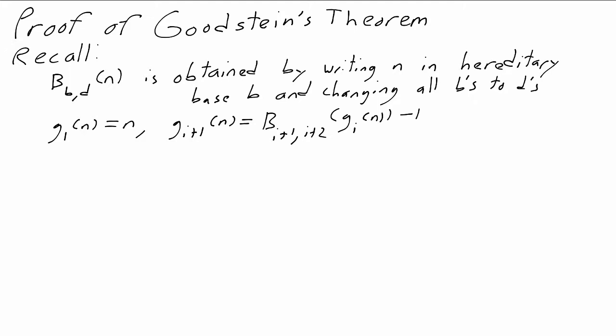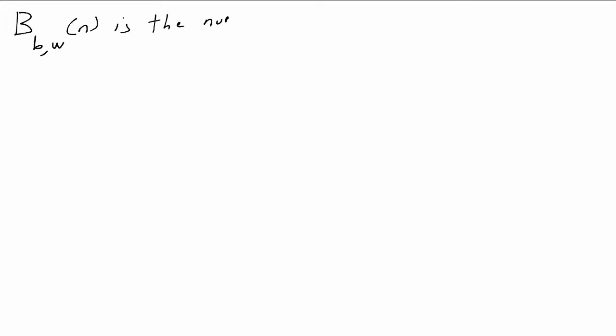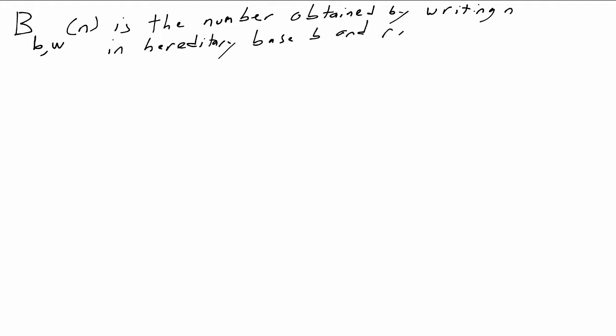The theorem we're trying to prove is that for every n, there is an i so that g_i(n) equals 0. The way we connect these to ordinals is by adding a new twist to the hereditary base change formula. When n is a number, b_{b,omega}(n) is the ordinal that we get by writing n in hereditary base b and then replacing all of the b's with omegas and the usual addition with ordinal addition.